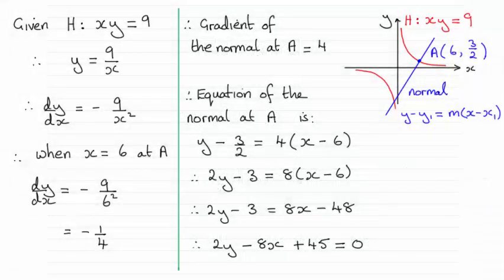Hi. Now, with this question, we were given the hyperbola H with equation xy equals 9, and the point A on the hyperbola, which you can see I've sketched here, with coordinate 6, 3 over 2.